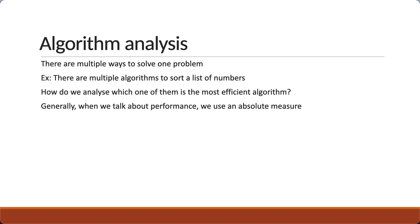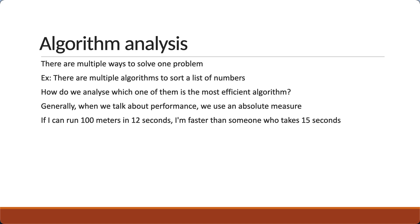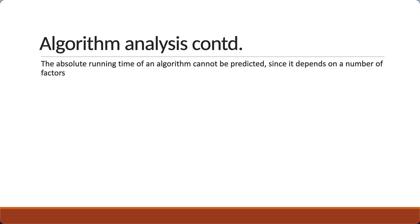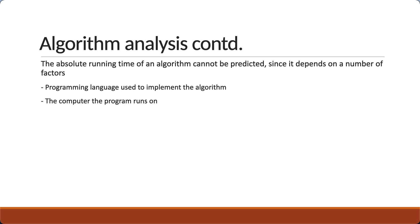Generally, when we talk about performance, we use an absolute measure. If I can run 100 meters in 12 seconds, I am faster than someone who takes 15 seconds. Analyzing algorithms, however, is slightly different. The absolute running time of an algorithm cannot be predicted since it depends on a number of factors — the programming language used, the computer the program runs on, other programs running at the same time, the quality of the operating system, and many other factors.